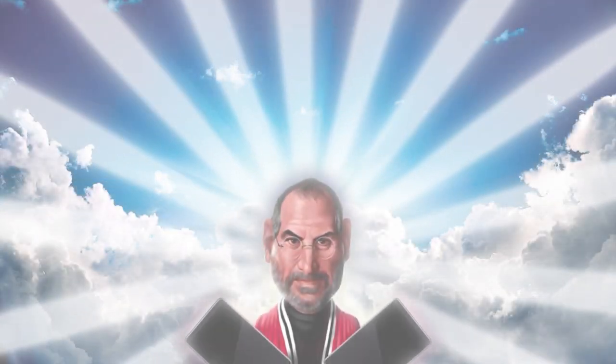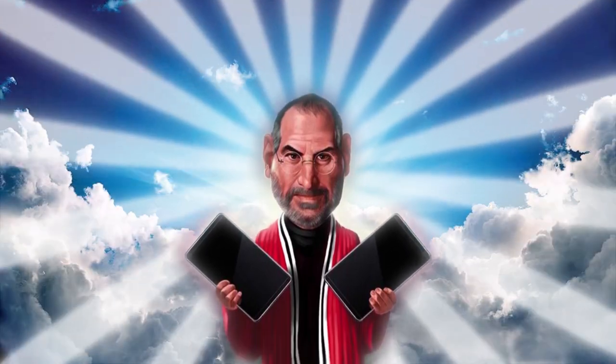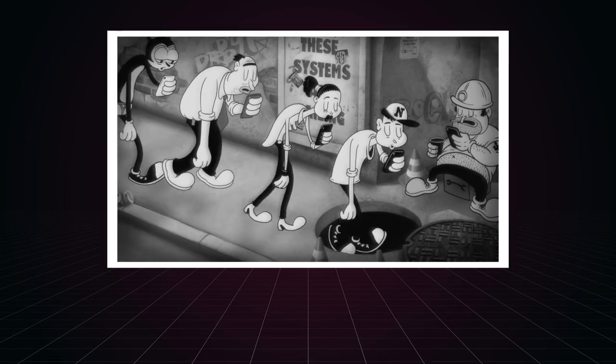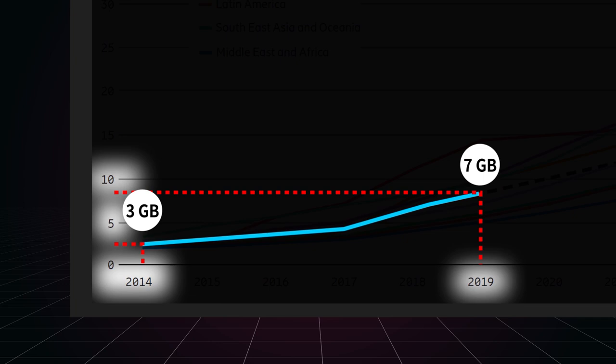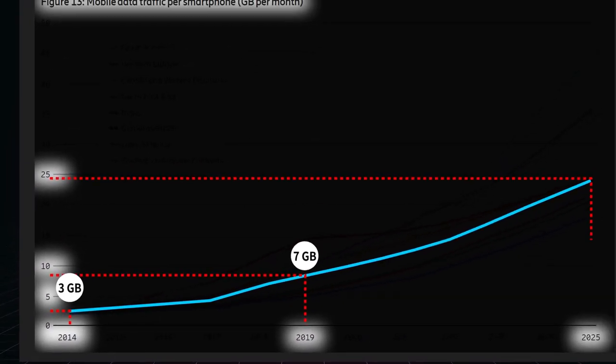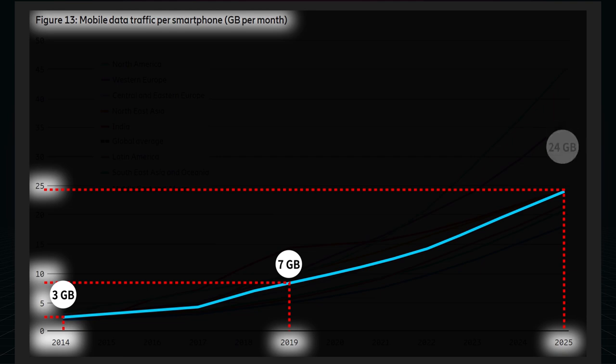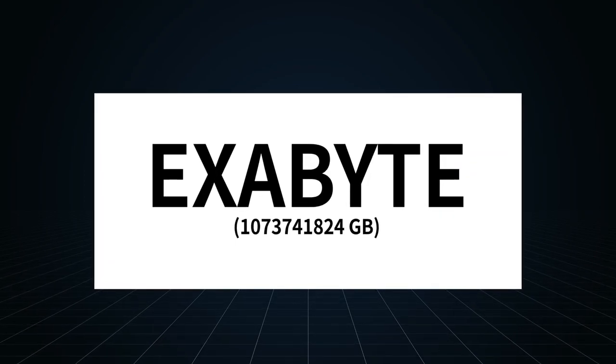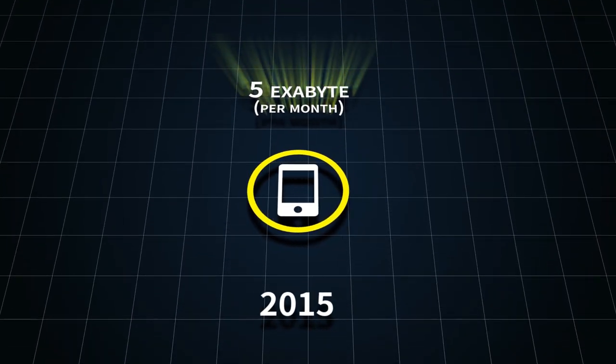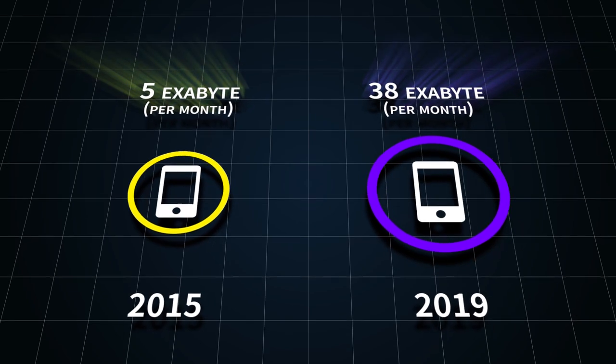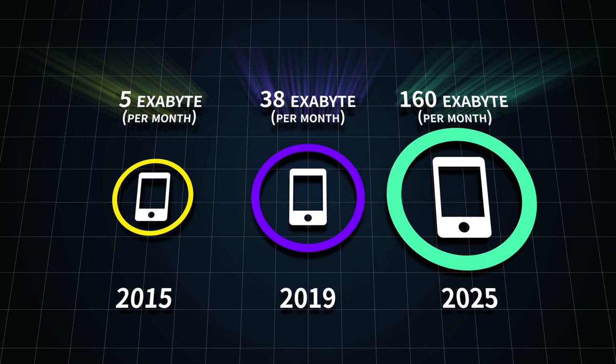If in 2014 one smartphone consumed about three gigabytes of traffic per month, then by 2019 we were using two times more, and by 2025 we can expect everyone will devour 24 gigabytes per month. Five years ago we consumed five exabytes per month via mobile devices. By 2019 the number was 38, and by 2025 it will increase four times up to 160.